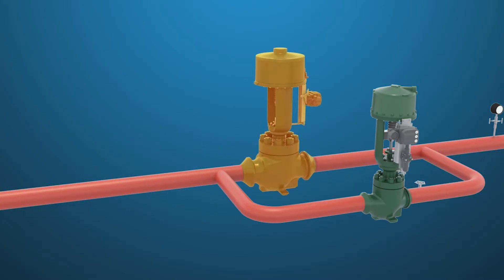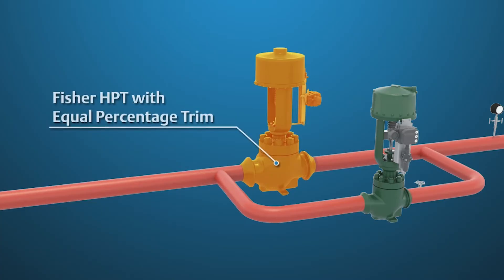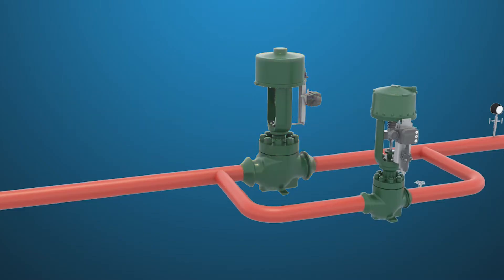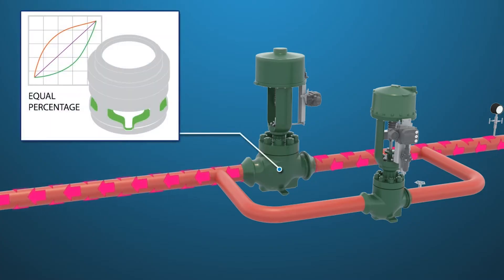An ideally-sized regulating valve system will have the main feed water regulator valve CV at about 20% open, equivalent to the CV of the startup valve at 80% open. As a rule of thumb, the feed water valve should have an equal percentage trim installed to offset the performance characteristic curve of the feed pump.